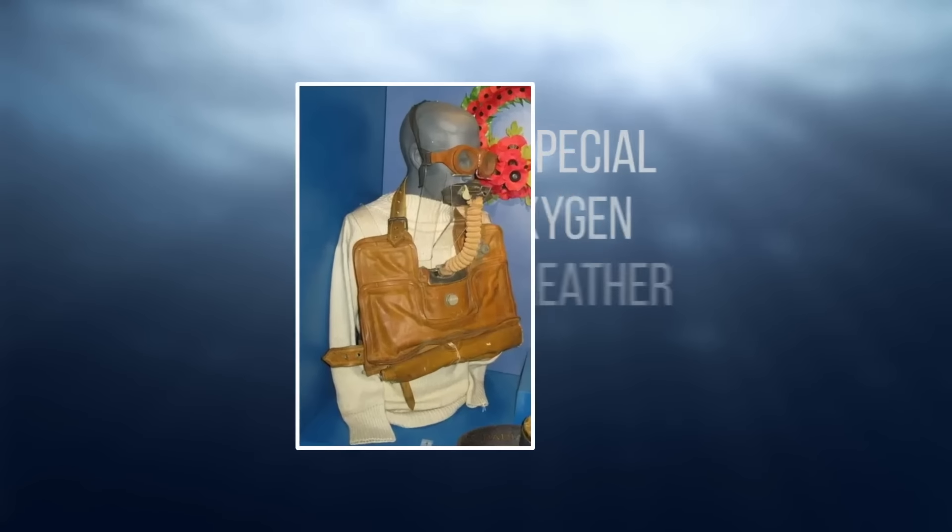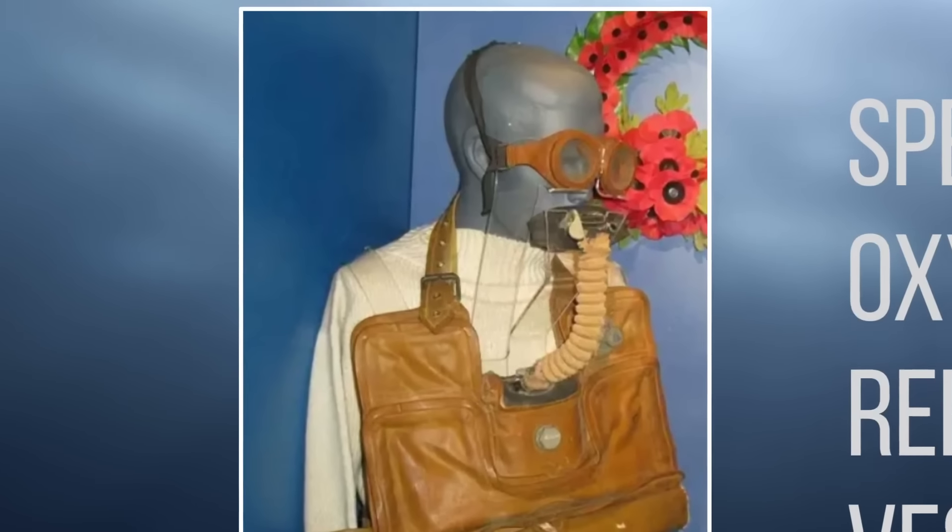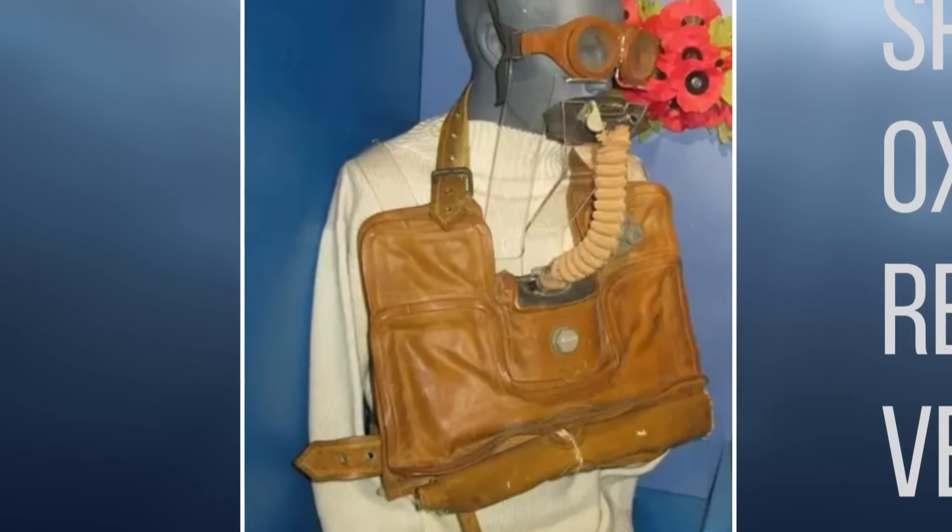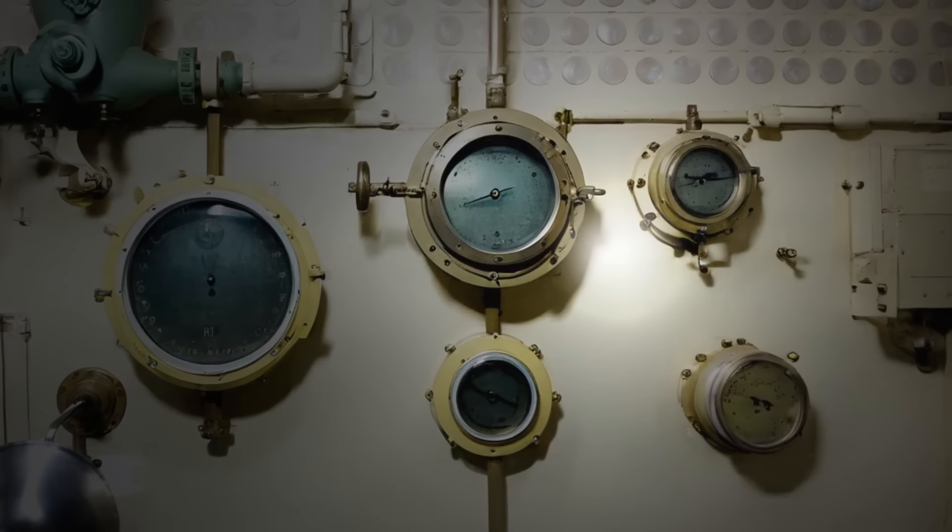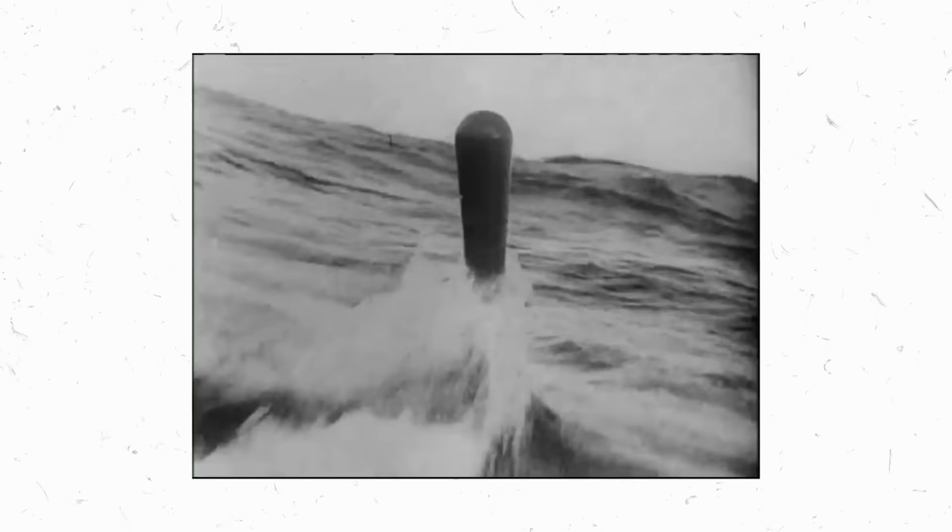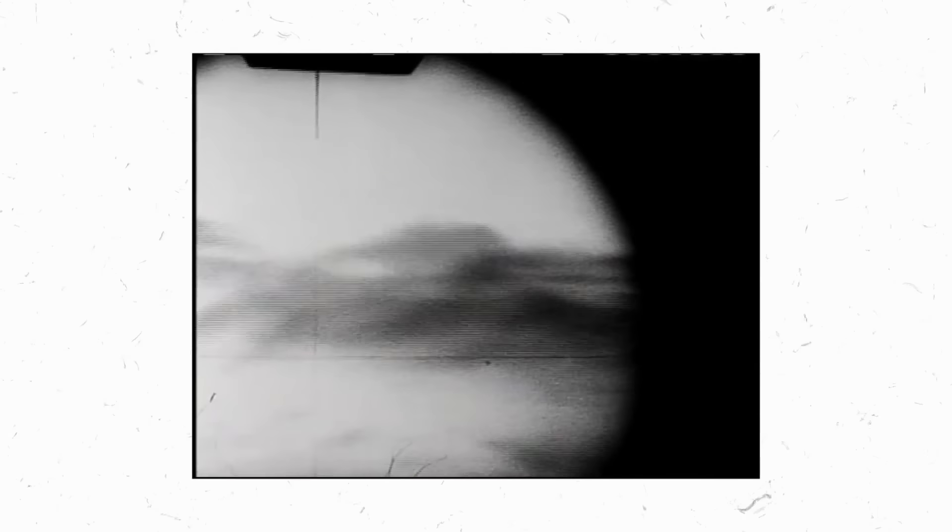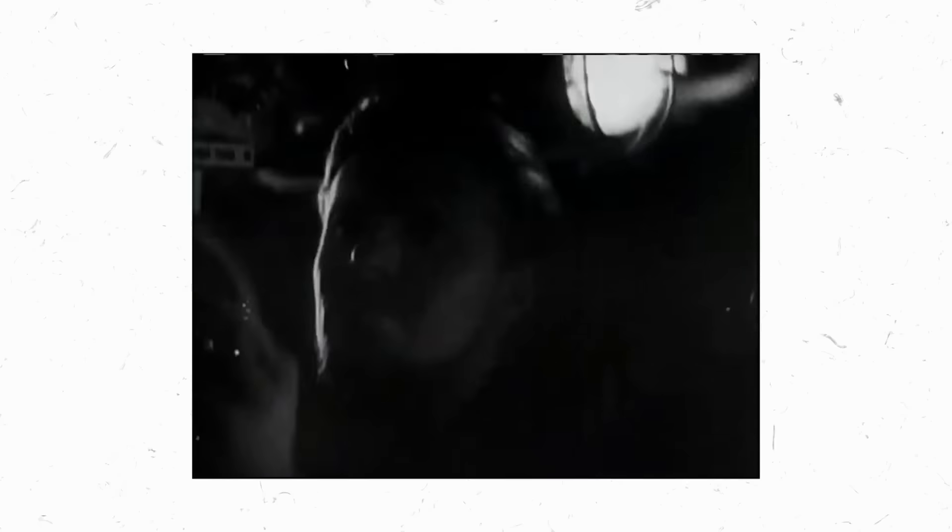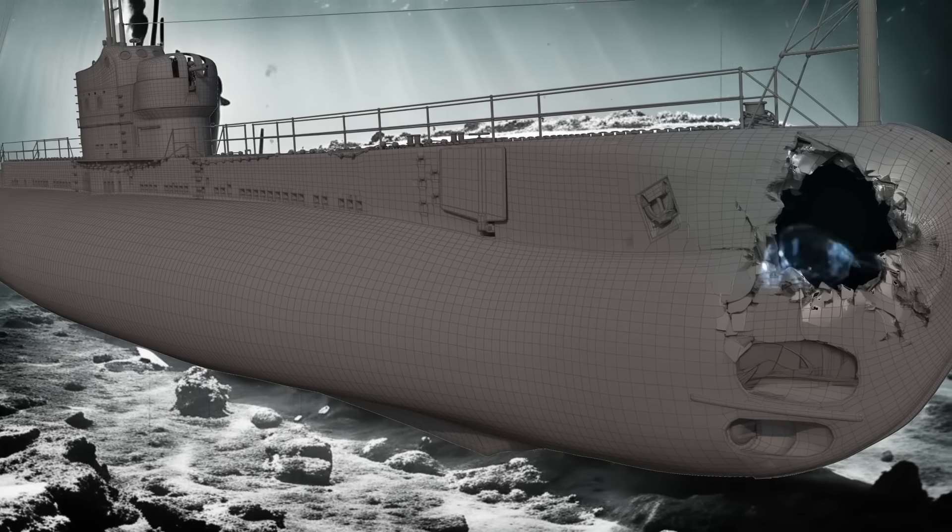Capes found four special oxygen rebreather vests and helped the crewman put them on before donning one himself. The depth gauge showed they were 270 feet below the surface. That was way beyond the safe operating limit of 100 feet for the vests. In reality, the gauge was wrong. They were actually 170 feet underwater, but it was still a dangerous depth.